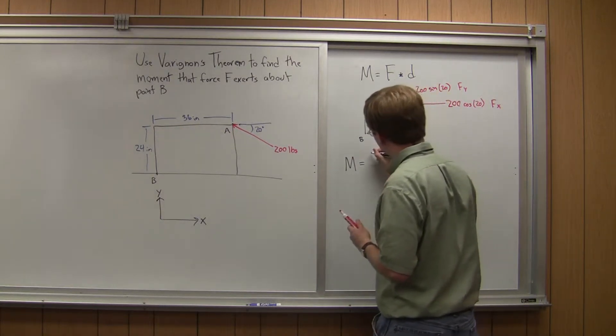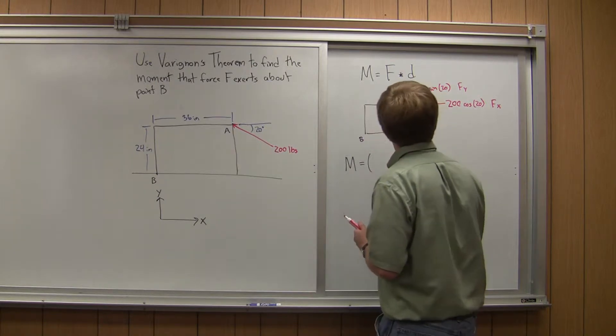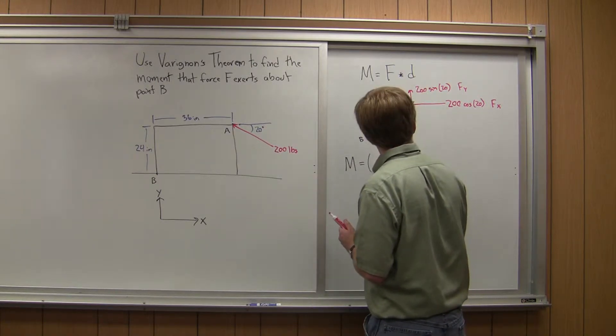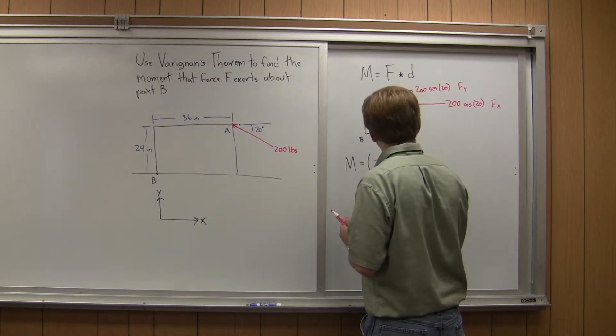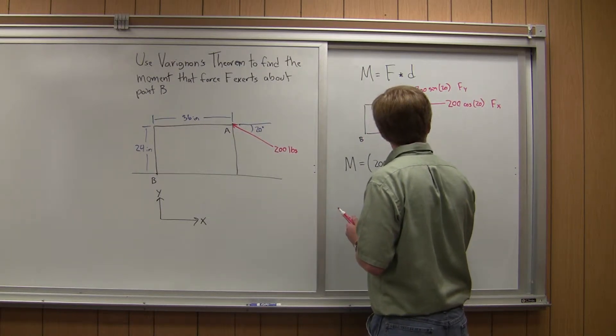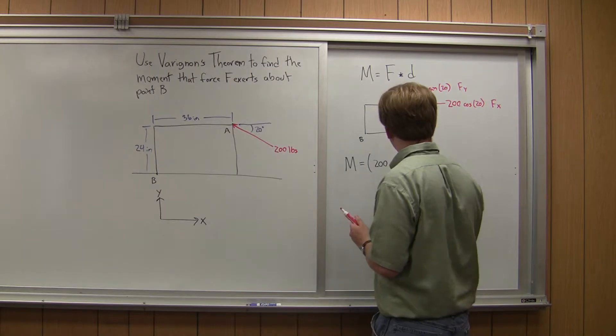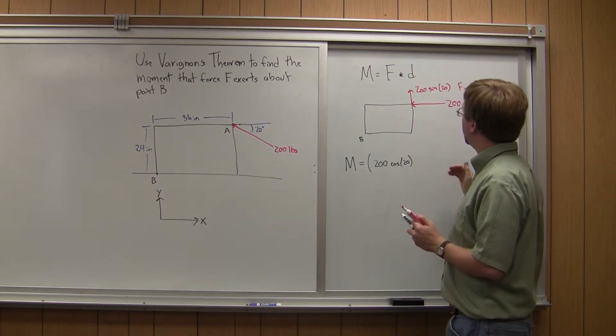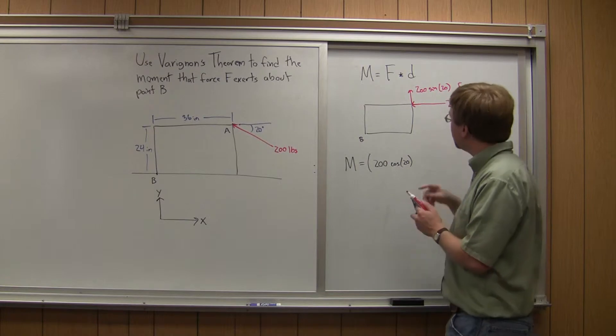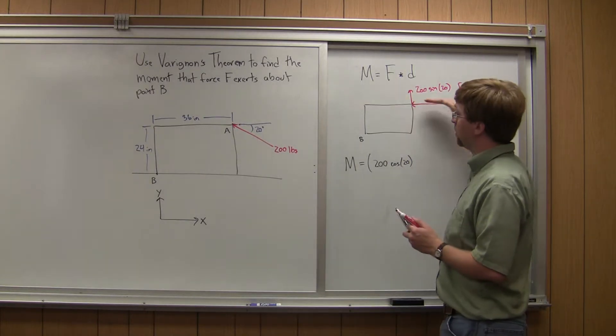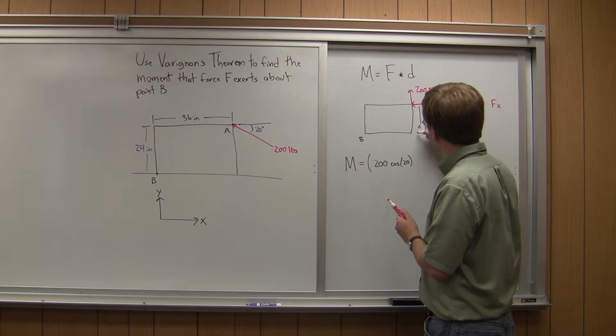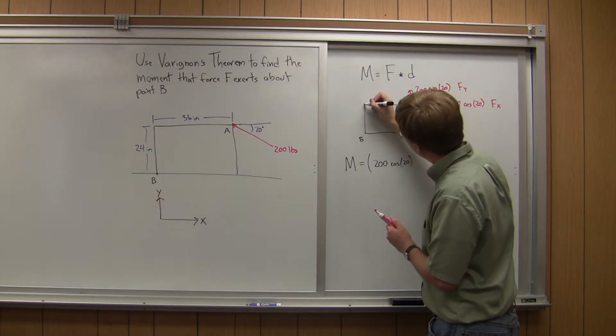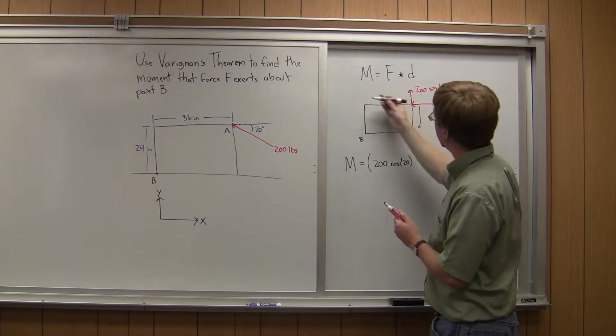So my moment is going to be Fx, or 200 times the cosine of 20, that's my force in the x direction, times the distance. And so the perpendicular distance right here is easy. It's going to be this distance here, or really if I go here, is where it's going to be closest.